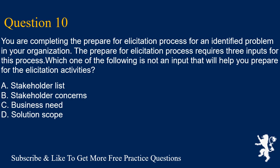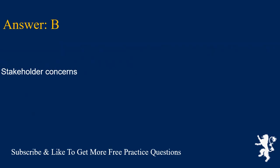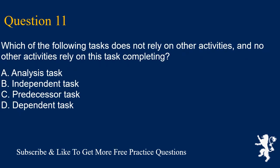Question 10: You are completing the prepare for elicitation process for an identified problem in your organization. Which one of the following is not an input that will help you prepare for the elicitation activities? A. Stakeholder list. B. Stakeholder concerns. C. Business need. D. Solution scope. Answer is B. Stakeholder concerns.